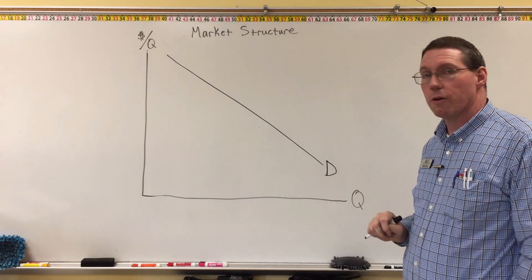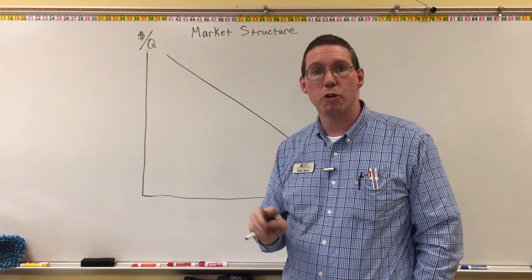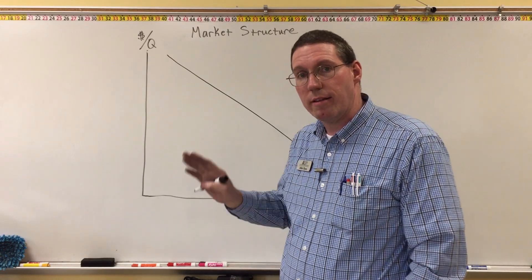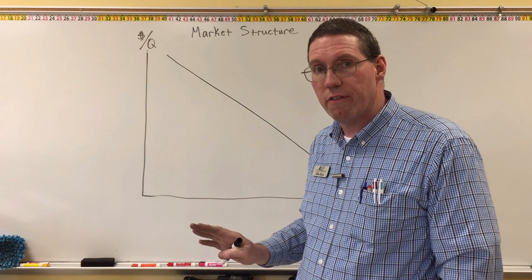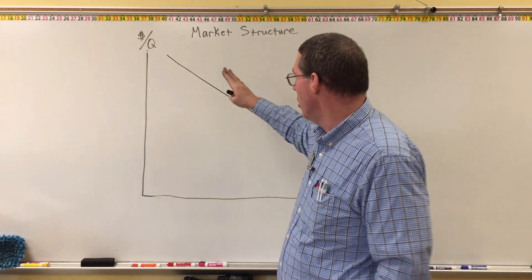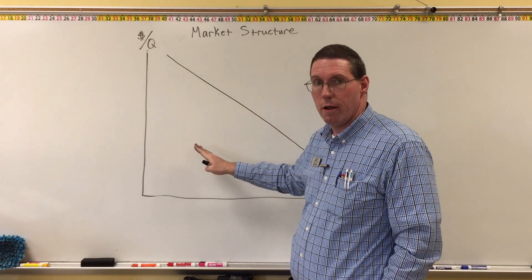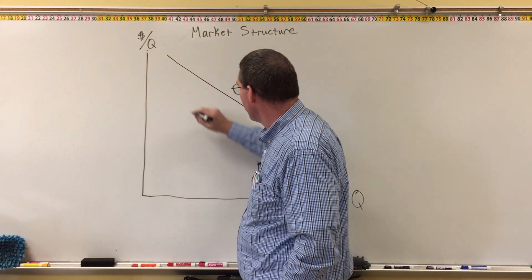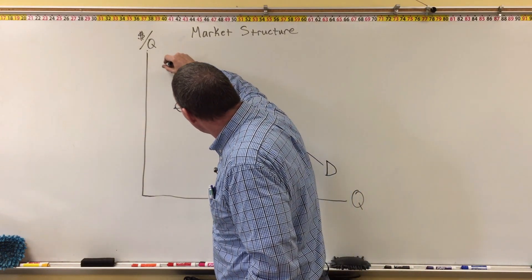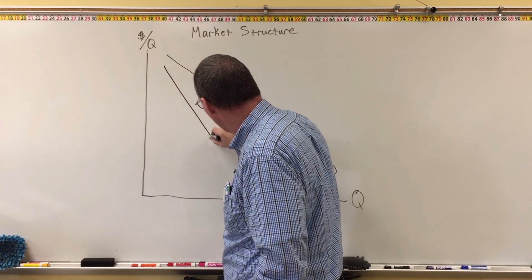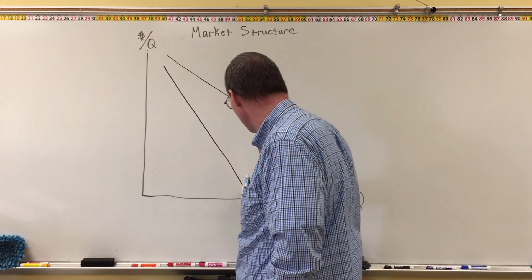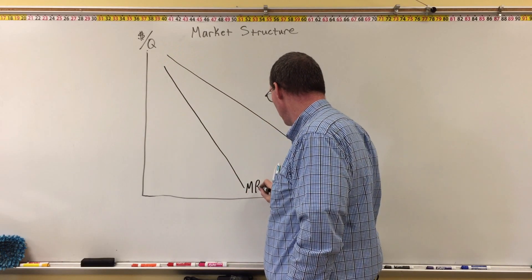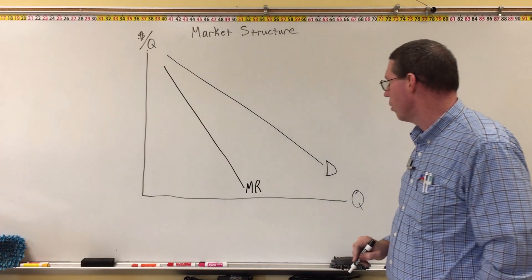The next thing we learned about is the marginal revenue curve. It's a downward sloping curve that is under the demand curve, and usually it's a little bit steeper. I'm going to start up here and draw it right down here — that is the marginal revenue curve.